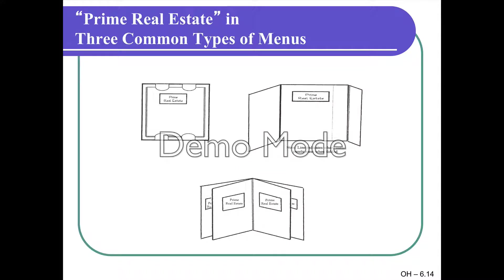Studies using gaze tracking show where our eyes go first on a menu. On a one-page menu, the prime real estate — where our eyes focus first — is at the top center. That's where we want to place items we want guests to purchase: our signature items, our most profitable items, or items that bring the best value to guests and are most efficient to produce. Every menu format has its own prime real estate, and we need to use it like marketers do.